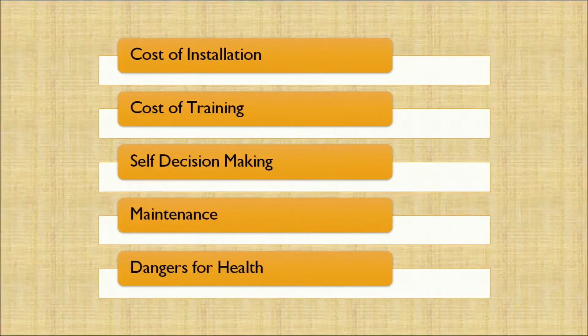Let's now discuss the limitations of a computer. There are majorly five limitations. Number one: cost of installation. Second: cost of training. Third: no self decision-making. Fourth: maintenance. Fifth: danger to health. The computer is a system which is a bit costly, ranging from ten to fifteen thousand to any number of rupees. Therefore, the installation of a computer is costly compared to manual accounting entries.